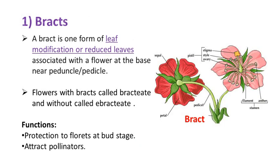A bract is one form of leaf modification, or reduced leaves associated with a flower at the base near the peduncle or pedicel. Flowers with bracts are called bracteate and without are called ebracteate. These provide protection to florets at the bud stage and help attract pollinators.